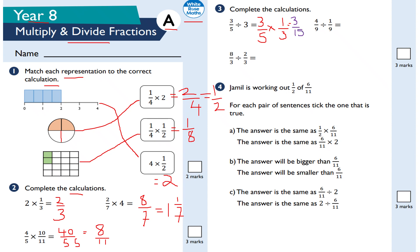It's the KFC method — keep, flip, change. Or KCF: keep, change, flip — either way works. This next one: 4 ninths divided by a ninth. Keep the first fraction, flip the second one — take the reciprocal — so it goes to 9 over 1. Change the division to a multiplication. Working this out, I get 36 ninths, which simplifies to the whole number 4.